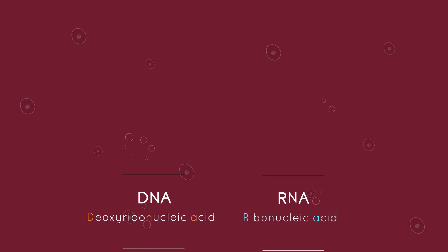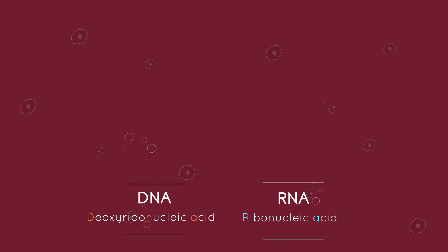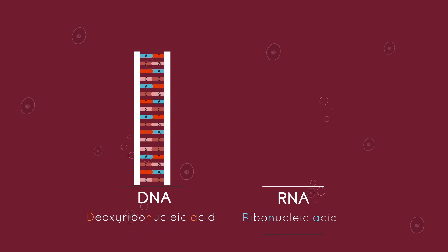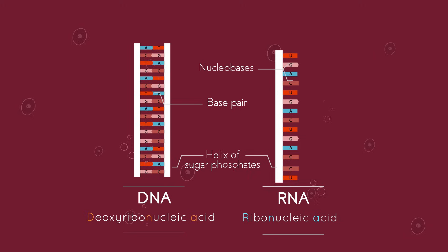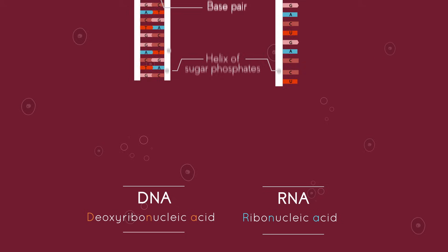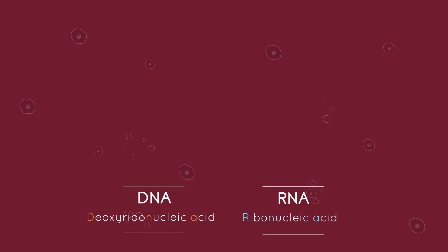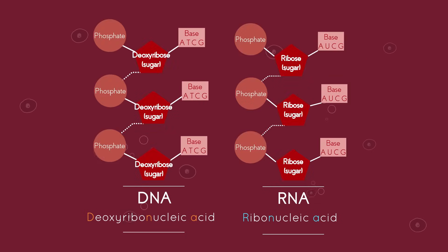So let's look at how they differ. Whereas DNA stands for deoxyribonucleic acid, RNA stands for ribonucleic acid. Whilst DNA is double-stranded, RNA is single-stranded. Like DNA, RNA is made up of a long chain of nucleotides. Each nucleotide consists of a ribose sugar, phosphate group and nucleotide base. RNA has a sugar called ribose, whereas DNA has a sugar called deoxyribose.